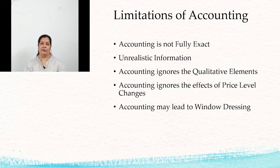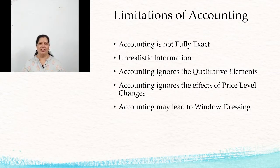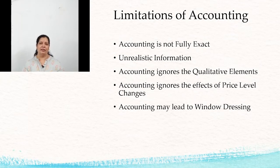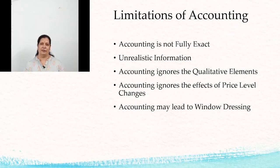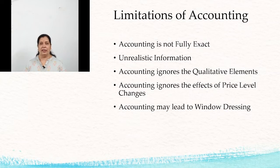Qualitative factors such as honesty and obedience of workers are not recorded. Also, accounting is prepared on historical cost, and we know that money and prices change frequently, so accounting statements may not always be correct or accurate. Accounting may also lead to window dressing, which means manipulating the business transactions.